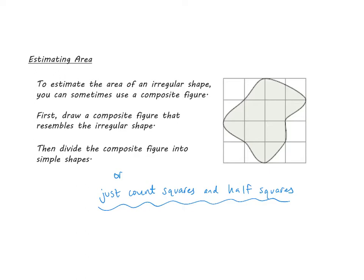Let's count these squares and half squares. I'm gonna start with the whole squares. I've got one, two, I'll count this as a whole square, three, four, five. Okay, now I'm gonna count half squares.